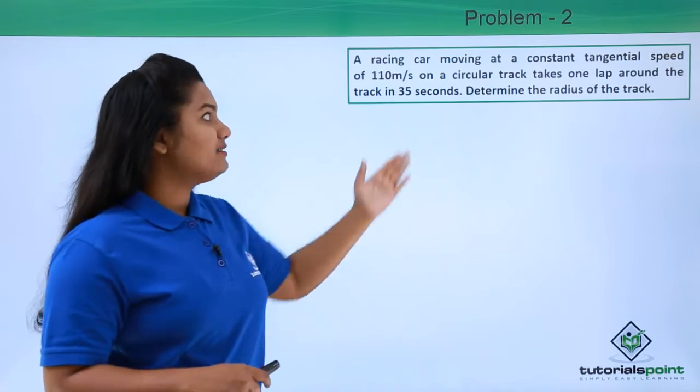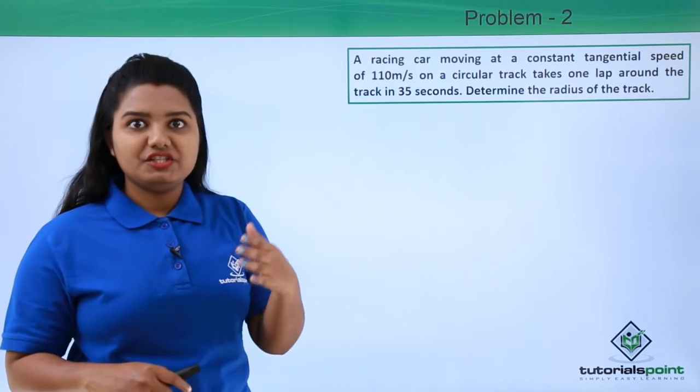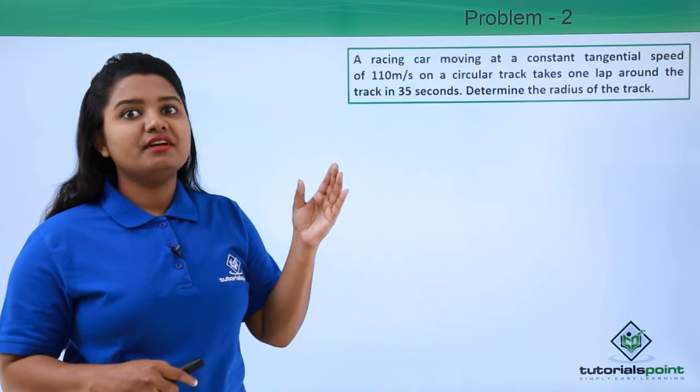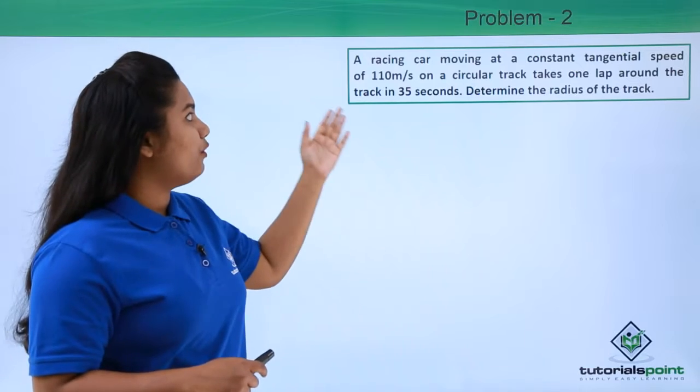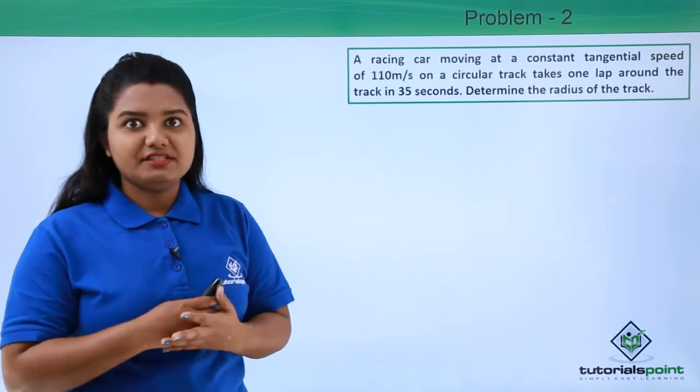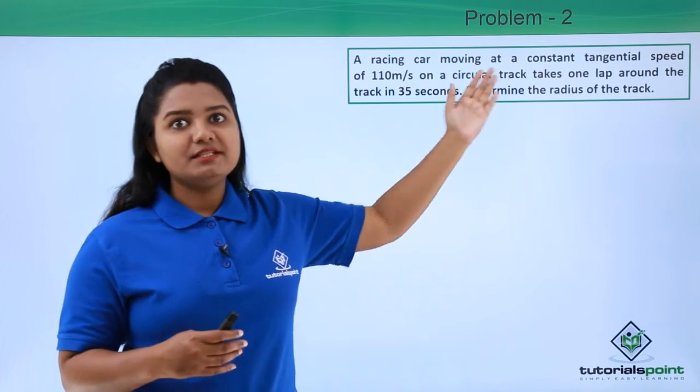We have already studied that the direction of the velocity or the speed of a body which is moving in uniform circular motion is along the tangent. So that is why it is referred to as the tangential speed sometimes.